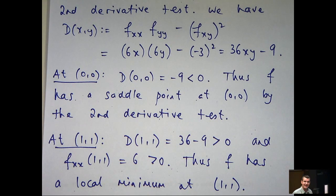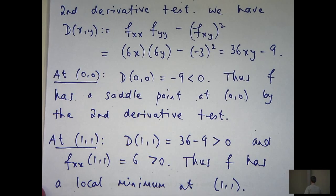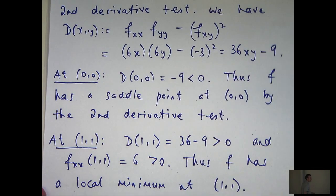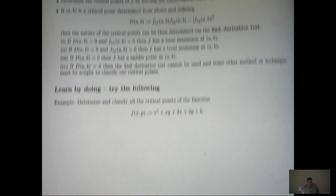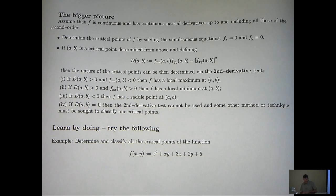So that's our question finished. We've located our critical points of f and classified them using the second derivative test. Let's look at the bigger picture here. What are some ideas that you can use in general?